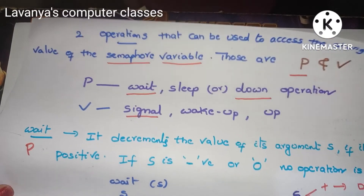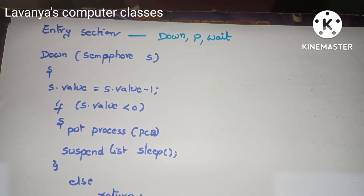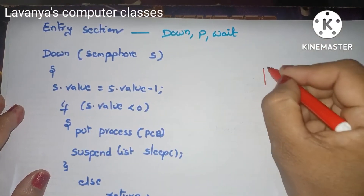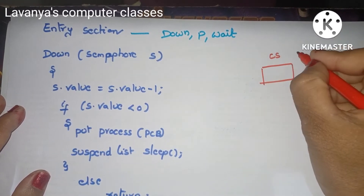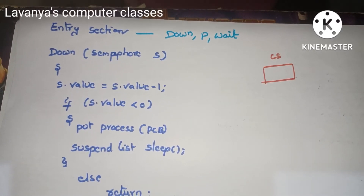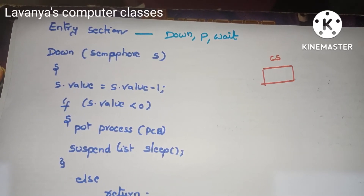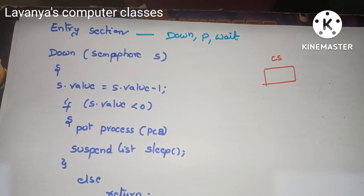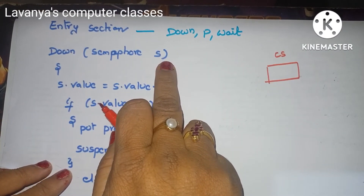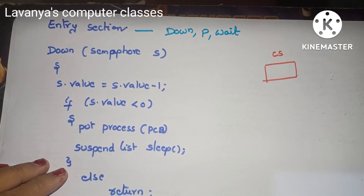Now I will explain with an example. Whenever any process wants to enter the critical section, we execute the entry section code — also known as down, P, or wait. The code is: down(S), where S dot value equals S dot value minus 1. If S dot value is less than 0, put the process in the PCB and keep it in suspended sleep; else return.